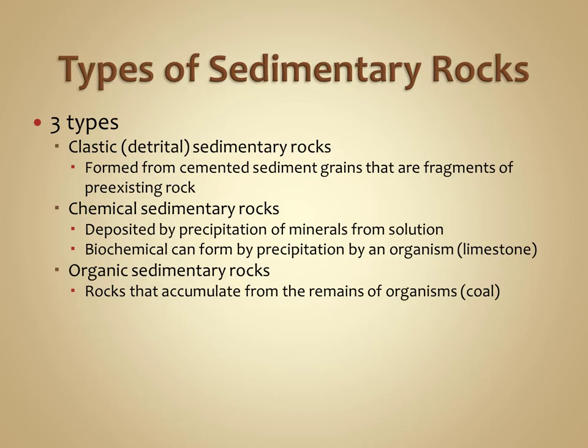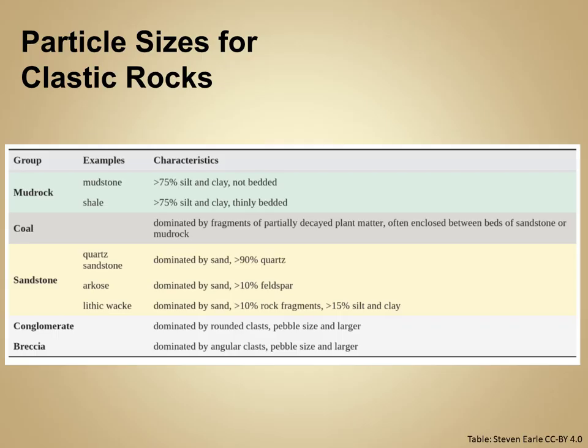This lecture will focus on the first of three types of sedimentary rocks. The three types are clastic sedimentary rocks, chemical sedimentary rocks, and organic sedimentary rocks. Clastic rocks are primarily made up of minerals such as quartz, feldspars, micas, and various clay minerals.